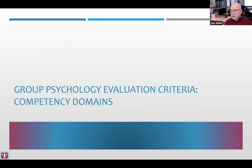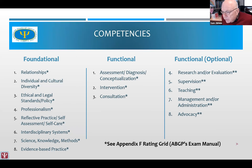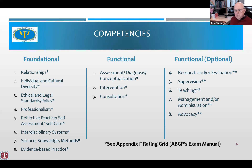Let's talk about the competency domains. There are the foundational competencies, which you see on the left-hand side in the first column, the functional — three of them in the middle — and five in the far right column. Any competency that has one asterisk means that a candidate must be examined in that particular domain. The far right side shows functional optional competencies, and I'll describe each of these so that you have a good understanding of them.